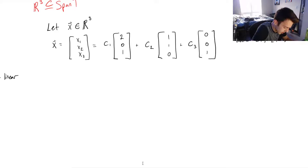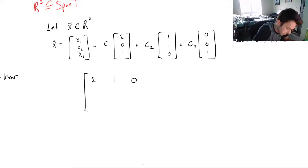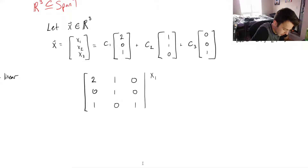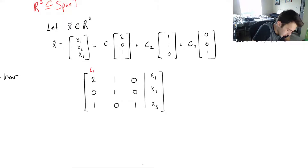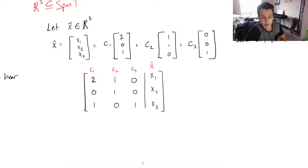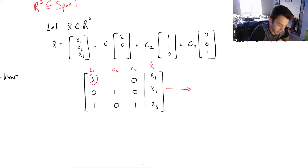We can set up an augmented matrix and solve. I'll take the coefficients — (2,0,1), (1,1,0), (0,0,1) — and augment with x1, x2, x3, since those are just general numbers. So C1, C2, C3 are what we're solving for, and the right-hand side is the X vector. Now I just need to row reduce. Since 2 is a leading entry, I'll take row one and divide it by two.